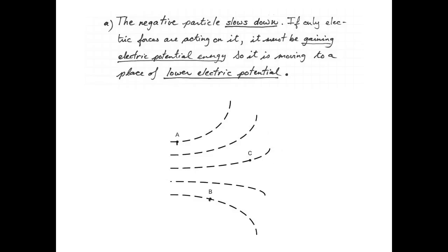To draw my electric field vectors, I'm going to begin by drawing a line that is perpendicular to the equipotential surfaces at points A and B.